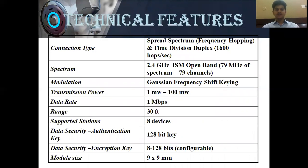The technical features of Blue Jacking are: connection type is spread spectrum and time division duplex at 1 Mbps. It uses the 2.4 GHz ISM open band. Modulation is Gaussian frequency shift keying. Transmission power ranges from 1 microwatt to 100 microwatts. Data transmission rate is 1 Mbps. Range is 30 feet. It supports 8 stations — one master and 7 slaves. Data security uses a 128-bit authentication key and an 8 to 128-bit configurable encryption key. Module size is 9 by 9 mm.